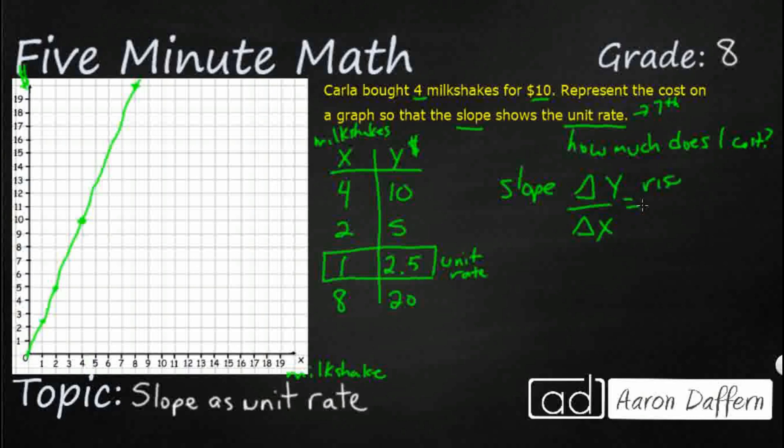One way we'll always remember that is rise over run. Rise is the Y coordinates go up and down, the run is the X coordinates, they go side to side. So let's just take some of these points here. I've got them graphed out here.